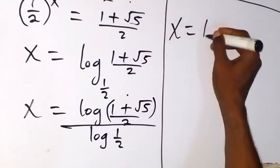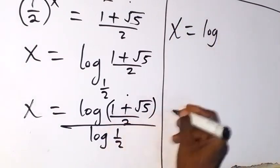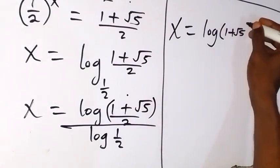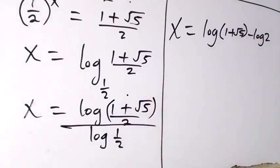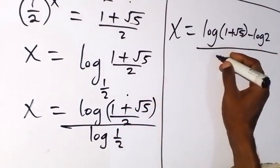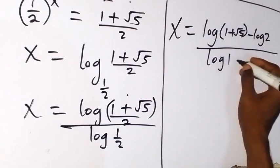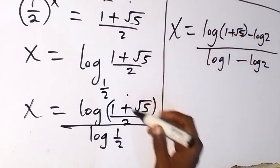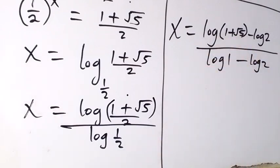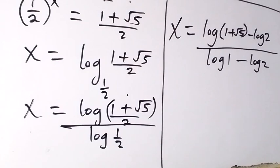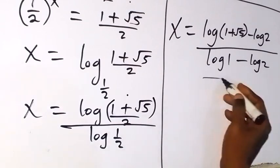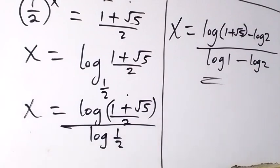We can then rewrite this as x equals log(1 plus root 5) minus log 2, divided by log 1 minus log 2, separating the logarithms using division rules. When we use a calculator to solve this, we get a numerical answer, and putting that answer back into the original equation confirms we get an approximate solution. We have come to the end of the class — thank you for joining us, don't forget to subscribe to this channel for more of our videos. See you in the next class!